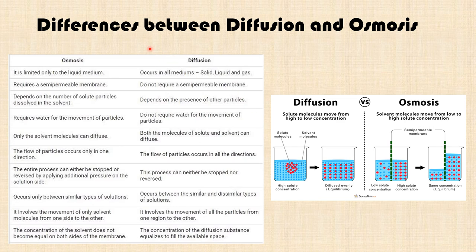Here are the differences between diffusion and osmosis. Osmosis is limited only to liquid medium, while diffusion occurs in all three media: solid, liquid, and gas. Osmosis requires a semi-permeable membrane, while diffusion does not. Osmosis depends on the number of solid particles dissolved in the solvent, while diffusion depends only on the presence of other particles. In osmosis, water is required for movement of particles; in diffusion, water is not required.